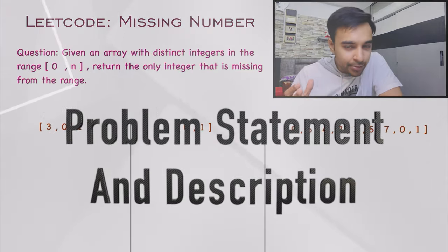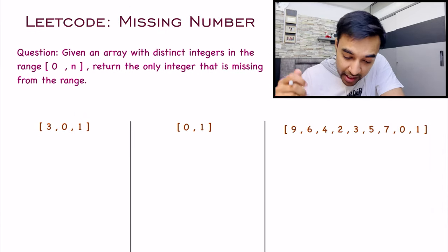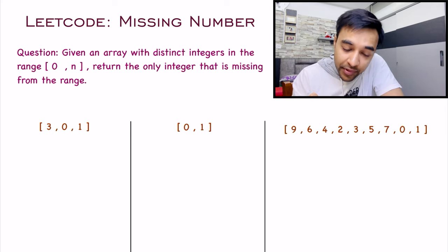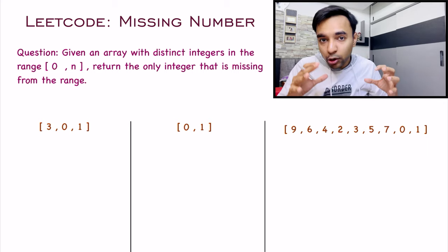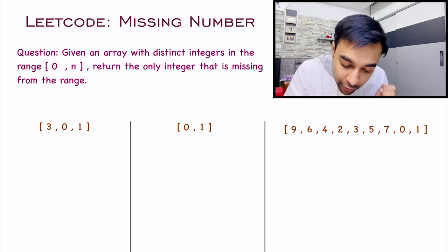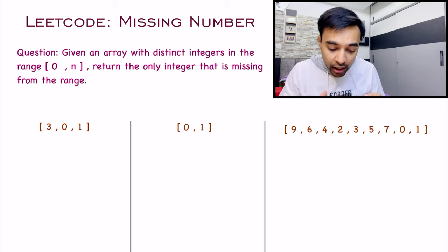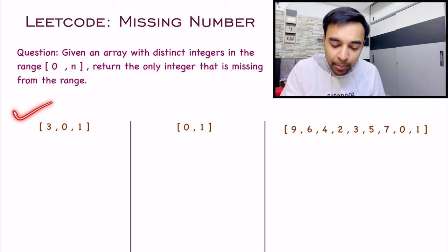First of all, let's make sure that we understand this problem statement correctly. You are given an array with distinct integers, and the property is that all of these integers lie in the range of zero to n. And what do you want to do? You have to return the only integer that is missing from this range.